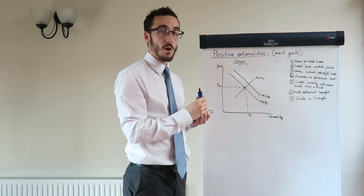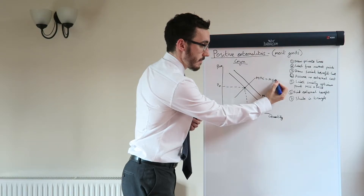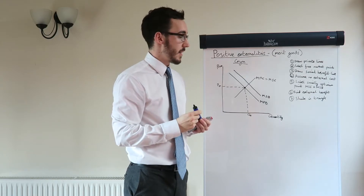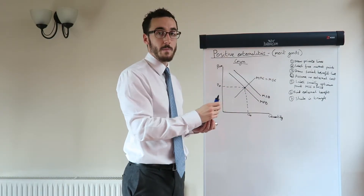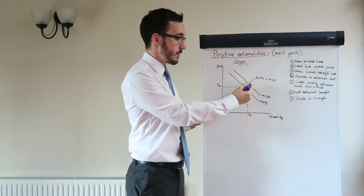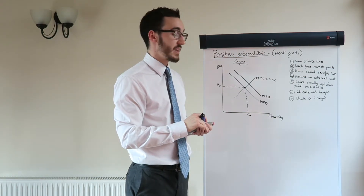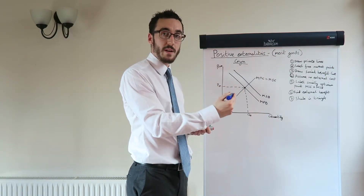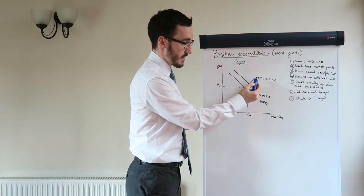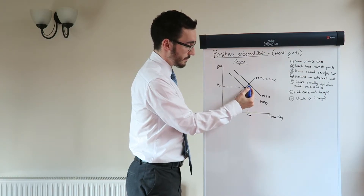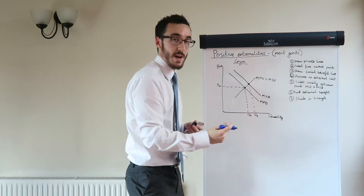With going to the gym and merit goods as a whole, we assume there's no cost to society — there is no external cost for going to the gym. Me going to the gym or cycling would not affect society negatively. So now we have a social benefit line and a private benefit line. As a government, we need to label the socially optimum point — a key term in Unit 1. That is where the marginal social benefit equals the marginal social cost. Because the social cost line is the same as the private cost line, the new quantity the government would hope we consume at is QS, the socially optimum point.